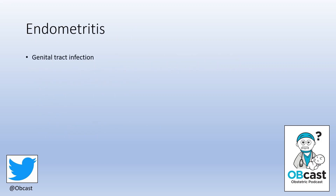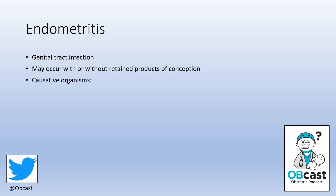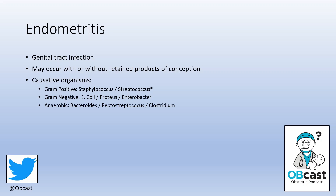Endometritis is a genital tract infection and it can happen with or without retained products of conception. In terms of causative organisms, it can be either a mixture of organisms or a single group. Gram-positive organisms such as staphylococcus and streptococcus are important, and there is a particularly virulent strain caused by group A strep. Gram-negative bacteria such as E. coli, Proteus, and Enterobacter, and even anaerobic organisms such as Bacteroides, Peptostreptococcus, and Clostridium, are all relevant causative agents.